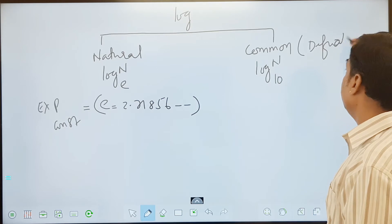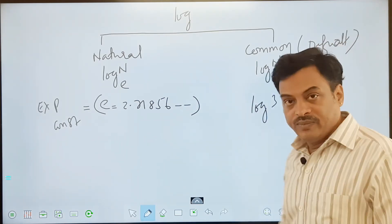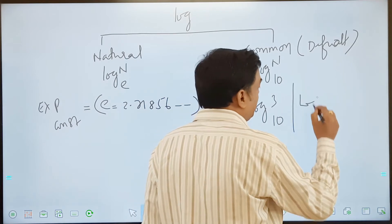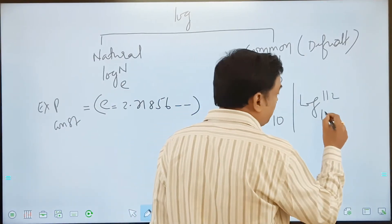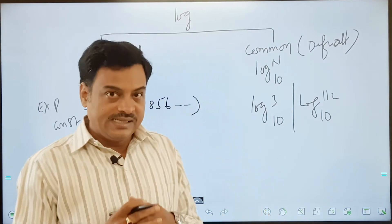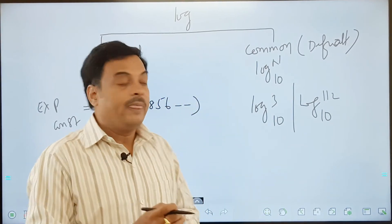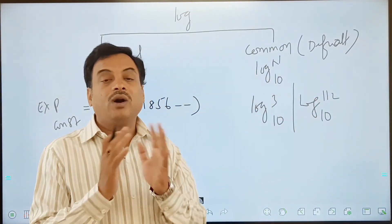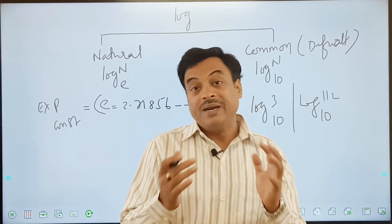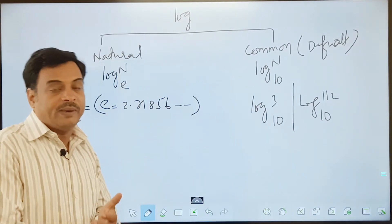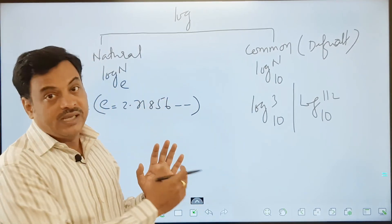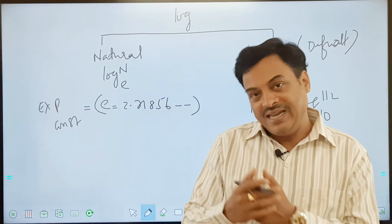If I say log 112, by default the base will be 10 — the 10 need not be given. By default, logarithms will have base 10. But is it necessary that only these two are bases? No. Logarithms can take any base — like base 2, 3, 7, 8, or any other number. Depending on the base, the logarithms will have their own respective values.